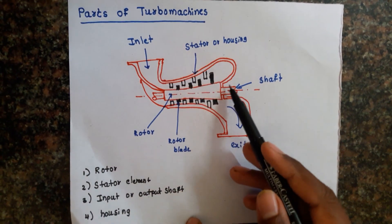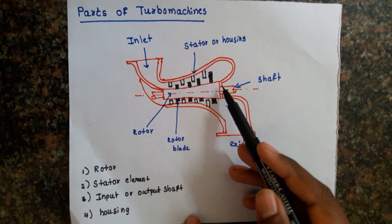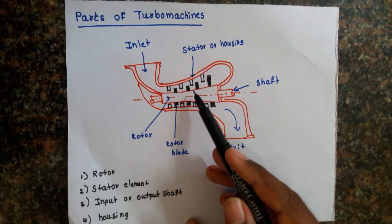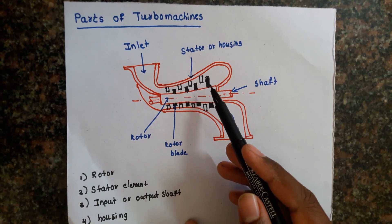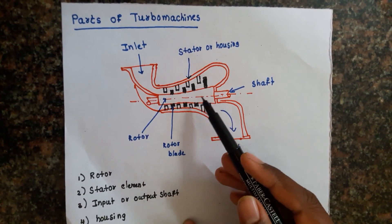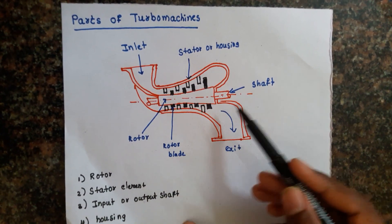Housing is used to prevent the splashing of fluid. Housing is not a necessary part of every turbomachine — for example, a fan.